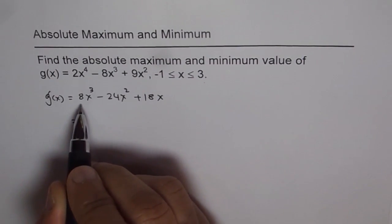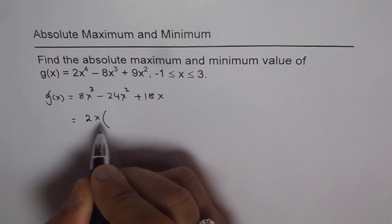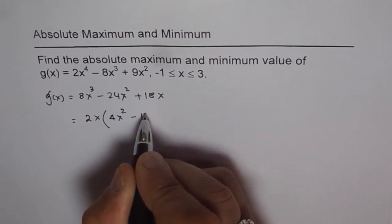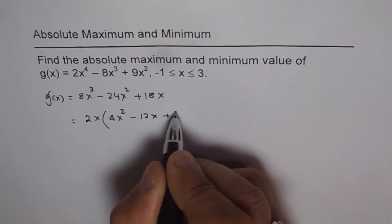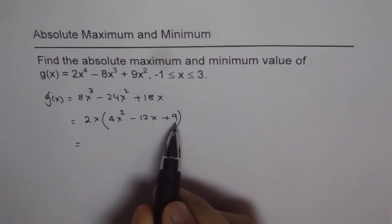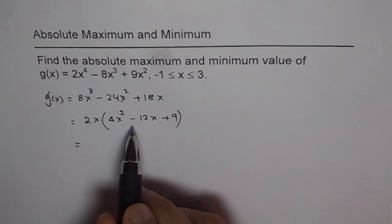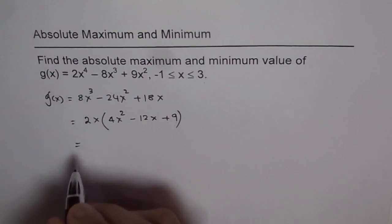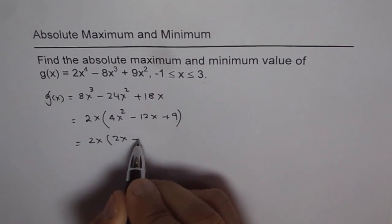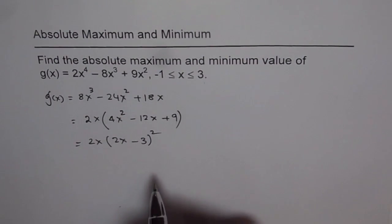We can take 2x as a common factor, and then we are left with 4x² - 12x + 9. We should now factor this. This is a perfect square: (2x)² minus 2 × 3 × 2x plus 3², so we can write this as 2x(2x - 3)². That is the factored form.